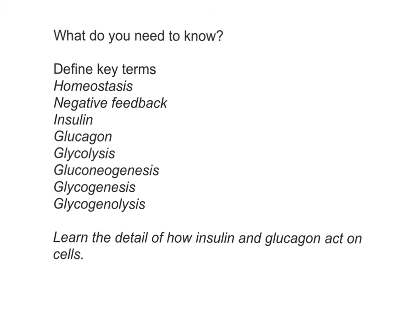Make sure you can define the key terms covered in this presentation: homeostasis, negative feedback, insulin, glucagon, glycolysis, gluconeogenesis, glycogenesis, and glycogenolysis. Also make sure that you can learn the detail of how insulin and glucagon act on the liver and muscle cells to bring about the changes described.